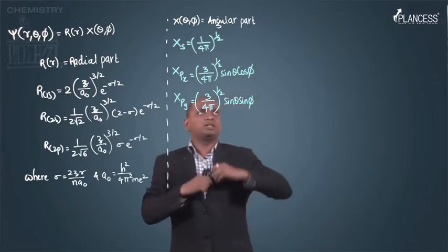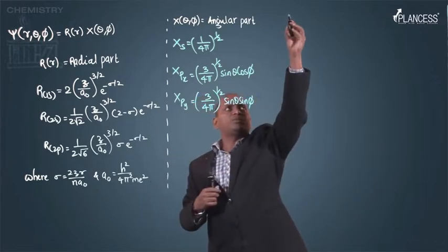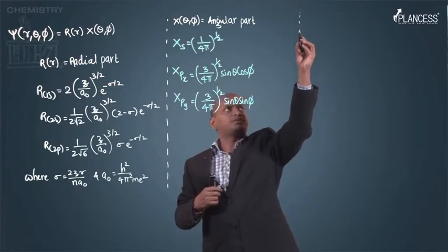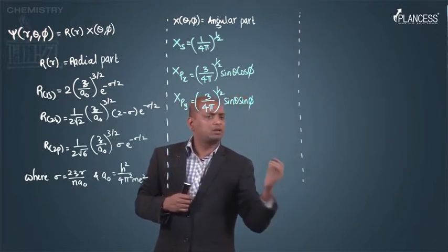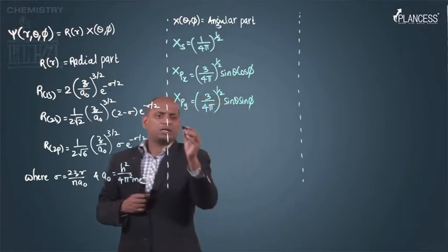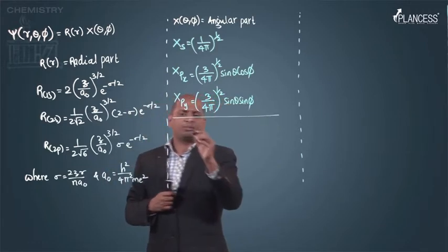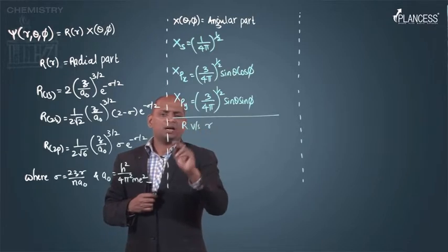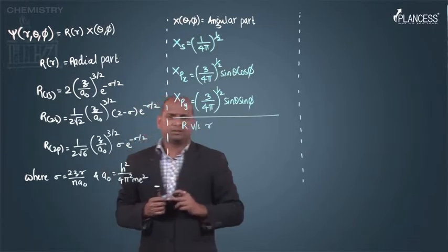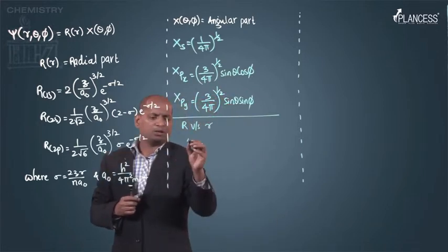From these equations, if we try to plot some graph, there are two types of graphs we can plot. One is r versus r - this r is a radial function, this is radius.